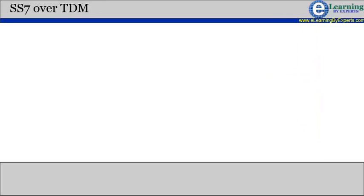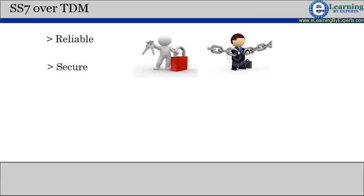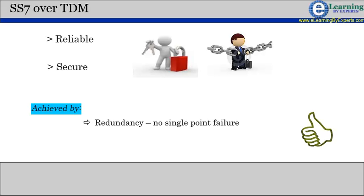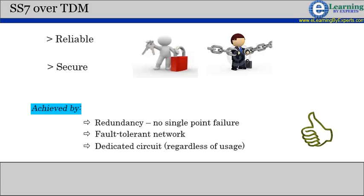In a traditional SS7 network, SS7 over TDM is reliable and secure. This is achieved by introducing redundancy in the network so that there is no single point of failure, and by creating a fault-tolerant network. SS7 networks create dedicated circuits for the duration of the call regardless of usage, which ensures resources are reserved and always available.